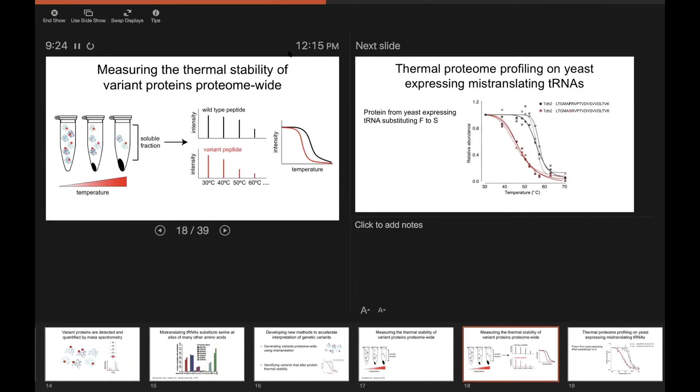And what we would be looking for is variants that come out of solution at a lower or higher temperature than their wild-type counterpart, suggesting that they have increasing or decreasing the protein's thermal stability.